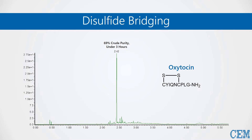Incorporation of Cys-MMT was simple. To deprotect MMT, the resin was treated with dilute TFA for a total of 10 minutes. Lastly, to form the disulfide bond, the peptide was subjected to a solution of NCS for 15 minutes at room temperature.